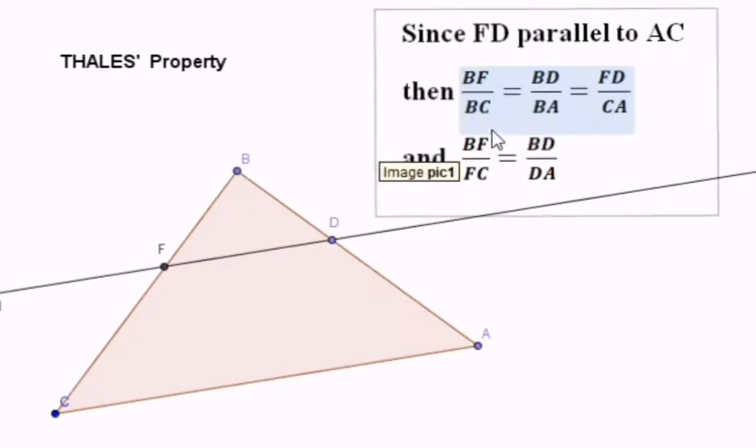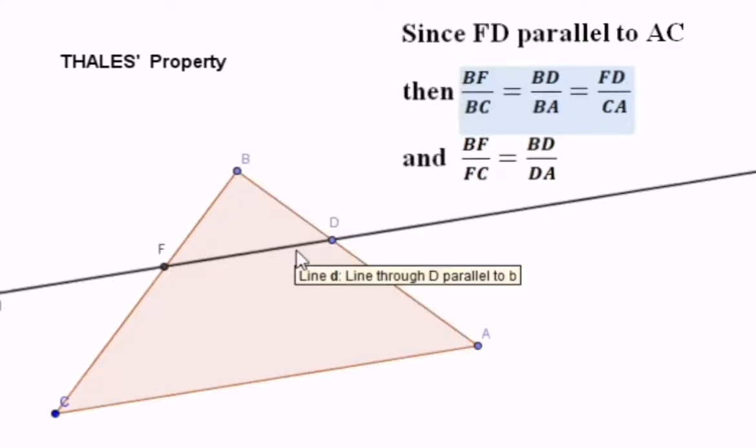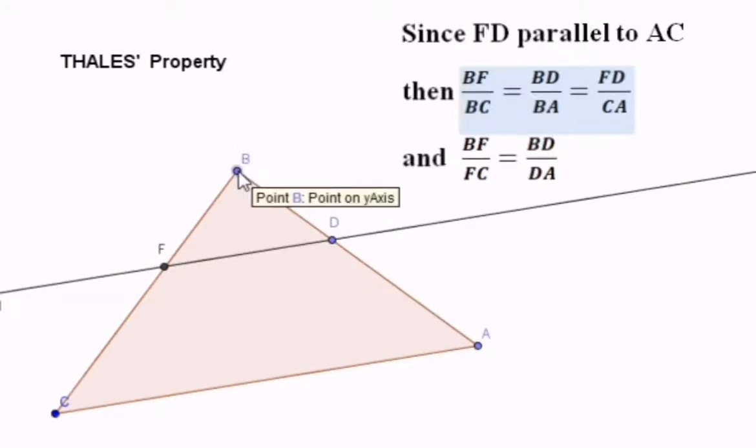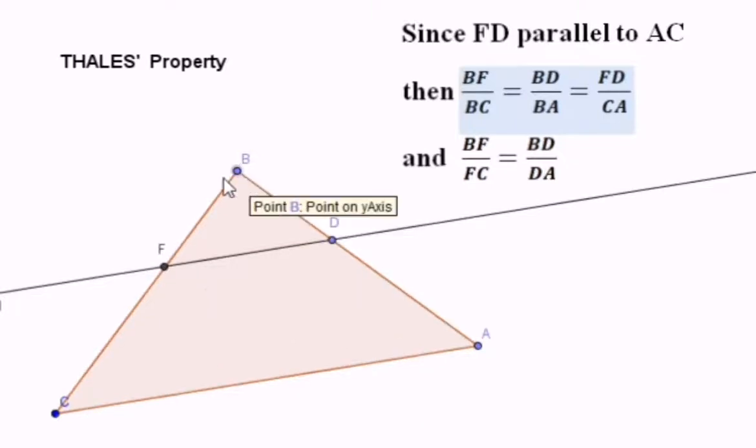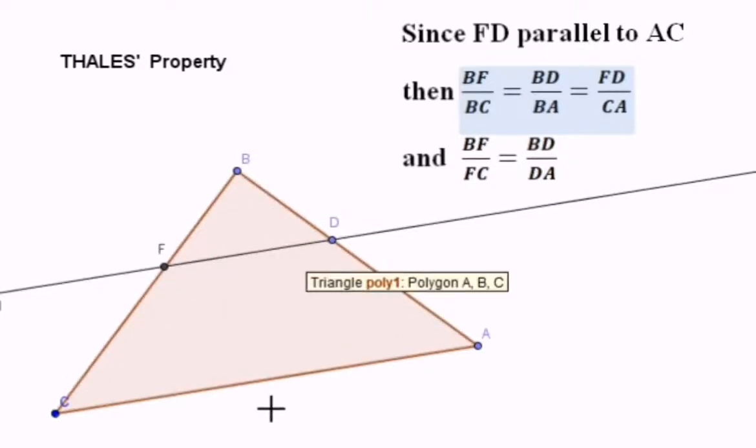The denominators BC, BA, CA are the sides of the greater triangle. So we can say that the small triangle BFD is the reduction of the bigger triangle BCA, or triangle BCA is the enlargement of triangle BFD. These two triangles are similar. They look like each other, but one is small and the other is bigger.